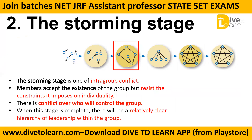The storming stage is characterized by intra-group conflict. Within the group there is conflict about who will control the group. Members accept the existence of the group, though this stage is complete when there is clarity over who is going to be the leader of the group.